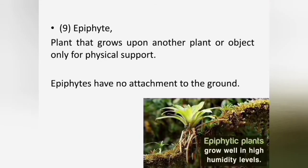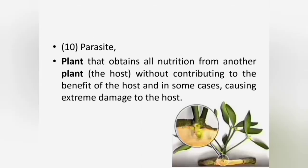Epiphytes are also called air plants. Epiphytic plants are plants that grow upon another plant or object only for physical support. They do not have any attachment to the ground. The best known examples of epiphytic plants are orchids and some mosses. Parasitic plants are plants that obtain all or part of their nutrition from another plant without contributing any benefit to the host, and also cause extreme damage to the host.